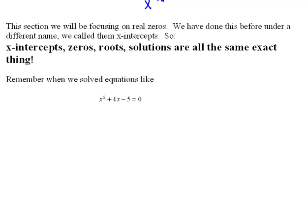Now, we've talked about real zeros before. We just called them something different. We call them x-intercepts. An x-intercept is where a graph crosses the x-axis. That's technically called a zero of the function. The y-value is zero.